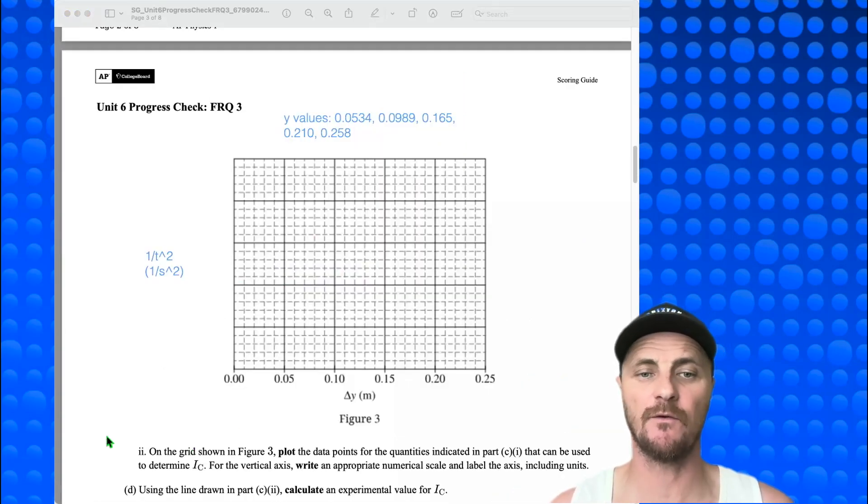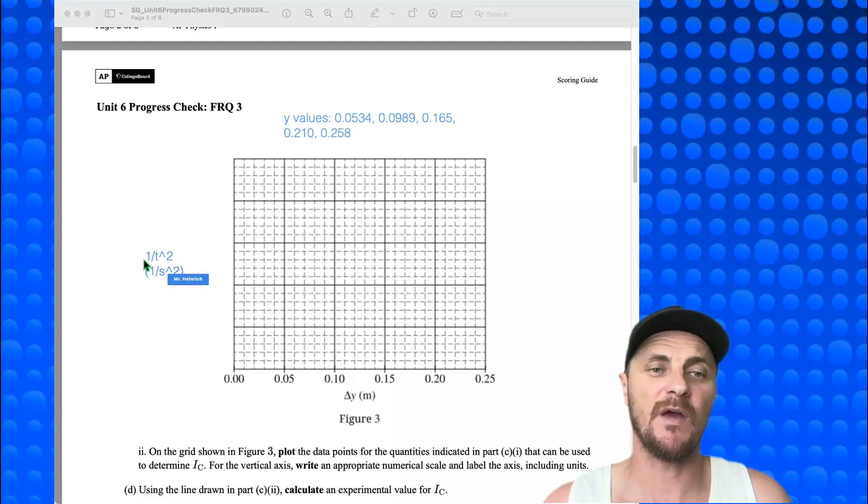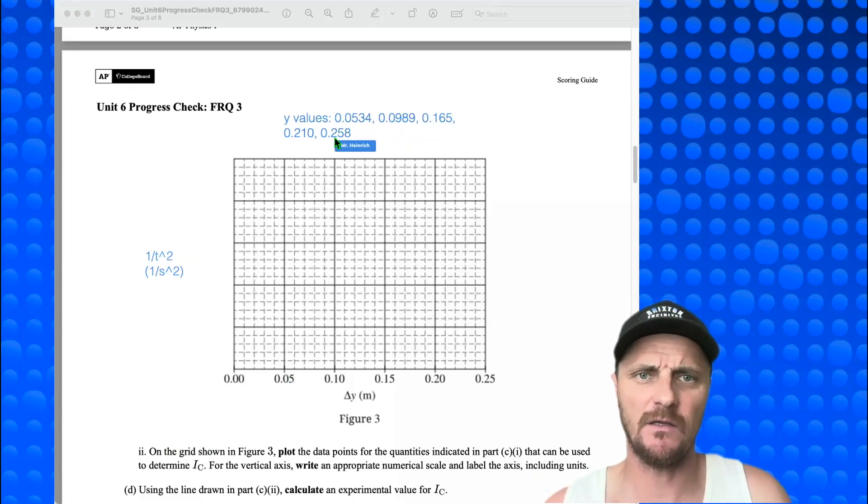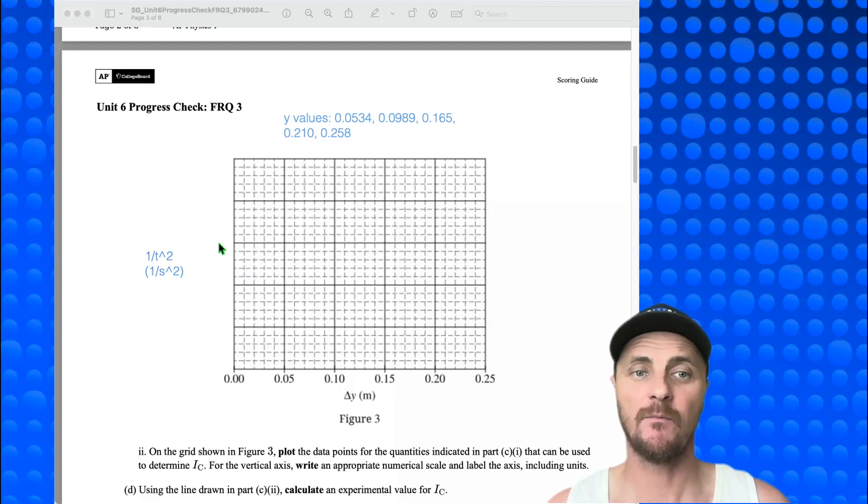Okay, so part two on the grid shown in figure three. Plot the data points for the quantities indicated in part c1 that can be used to determine ic. For the vertical axis, write an appropriate numerical scale and label the axis including units. And I've labeled the axis already. I put our y values here to help us remember what we need to do. And if I look at my top value, it is 0.258. I have 25 boxes, so I'm going to take this value and divide it by 25. And after dividing this by 25, I got 0.01. And that means that every box is going to be a 0.01 and every five boxes will be a 0.05. So I'm going to put in 0.05, 0.1, 0.15, 0.2, and then finally 0.25. And there we have it.